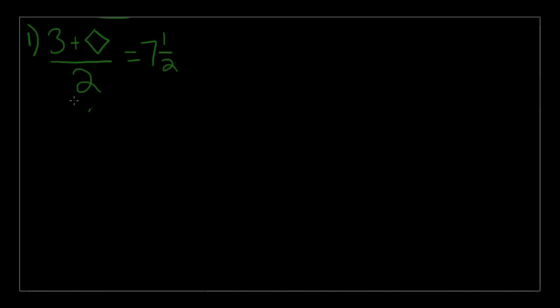Well, first thing we need to do is change this into an improper fraction, as now it's just a mixed number. So, let's multiply 2 with 7 and add 1, so we get 15 over 2.